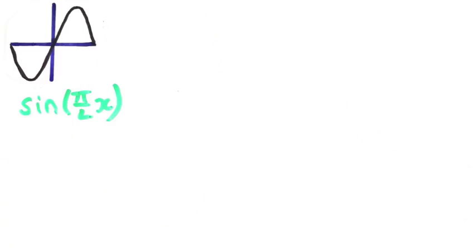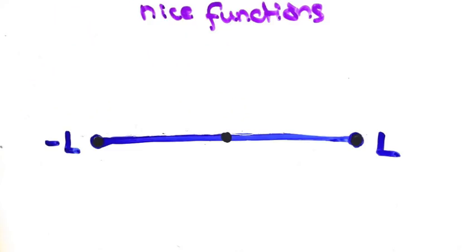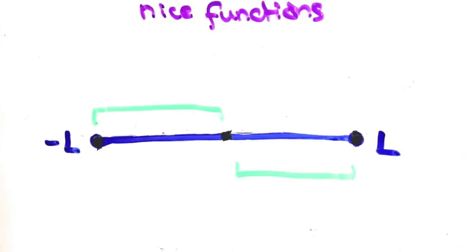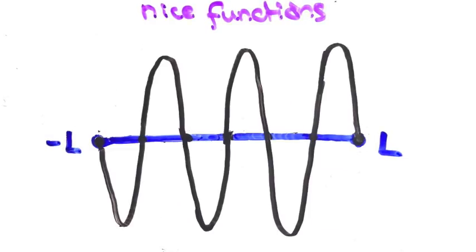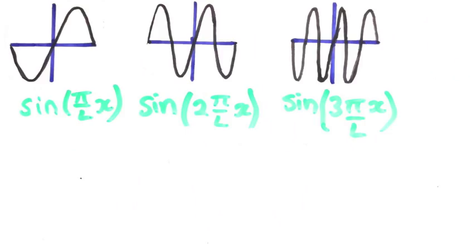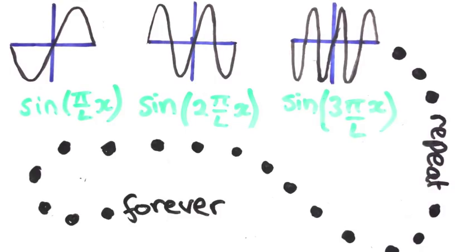You might recognize this as a sine function. Then for the next one, put down the original dots and now divide these sections into two and join the dots. For the next one, you divide this into three. These are both sine functions as well. Keep repeating the process and now we've made an infinite number of nice functions.